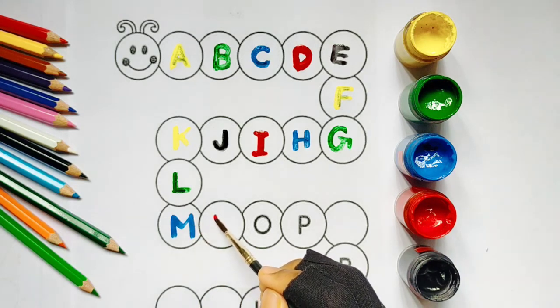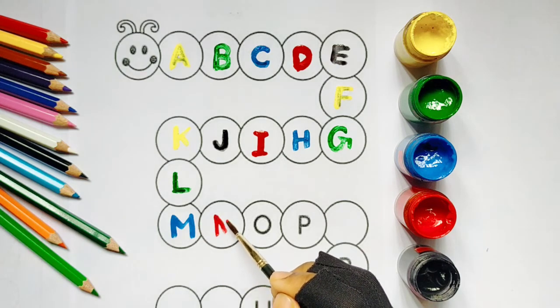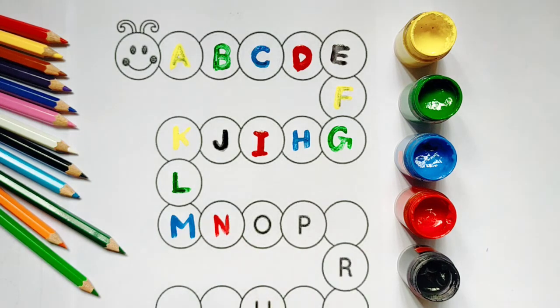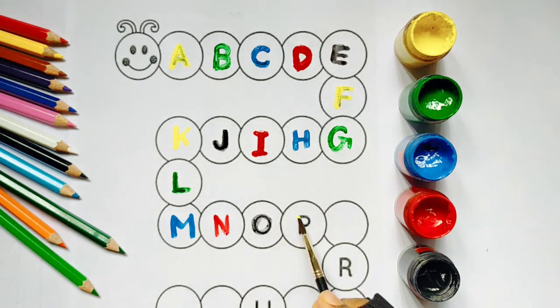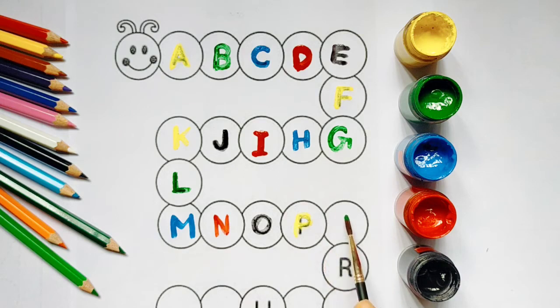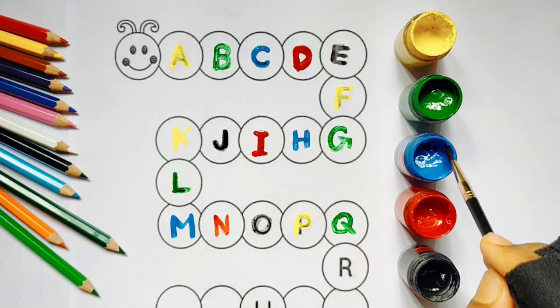Red color, N. N for nose. Black color, O. O for ox. Black color, O, O for ox. Yellow color, P. P for pencil. Green color, Q. Q for queen.